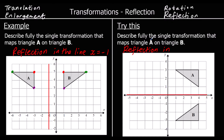So we can write: reflection in the x-axis. If we look at every point on A — this corner was one away from the mirror line, so there's a point one away on the other side. This point was three away, so there's a point three away on the other side. And this point, the shortest distance to the mirror line is three away, so there's a point three away on the other side.